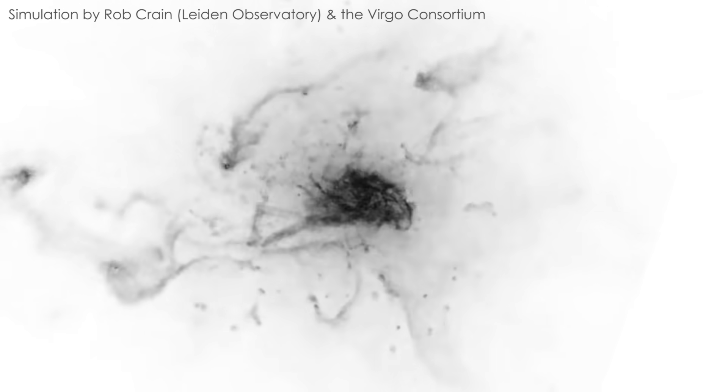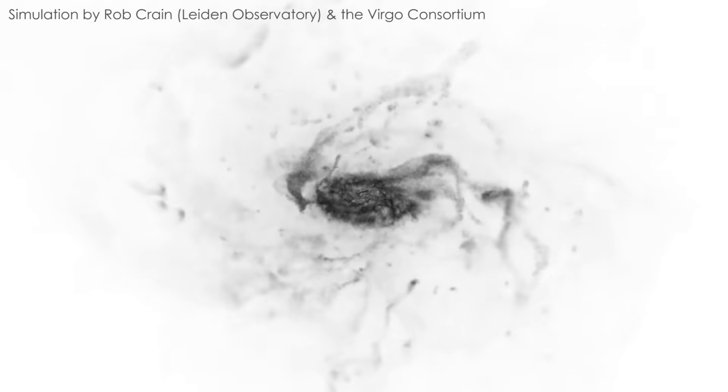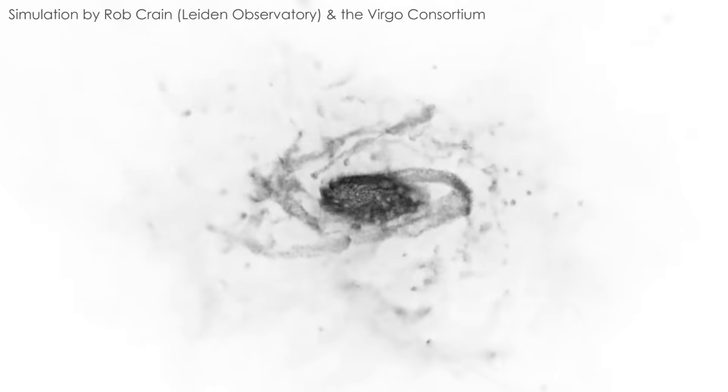So over time, through collisions and crashes, the cloud loses its loft and flattens into a spinning, roughly two-dimensional disk shape, like a solar system or spiral galaxy.